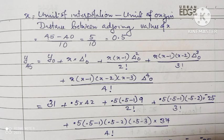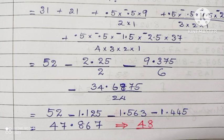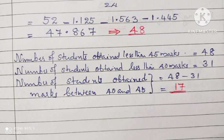Firstly, we have to find the value of x, x equals 45 minus 40 divided by 10. The answer is 0.5. Then Newton's formula we are writing. Calculating each value and solving, we will get the answer as 47.867. Since it is the number of students, therefore we are rounding it as 48. Number of students who obtained marks between 40 and 45 equals 48 minus 31, which is 17.